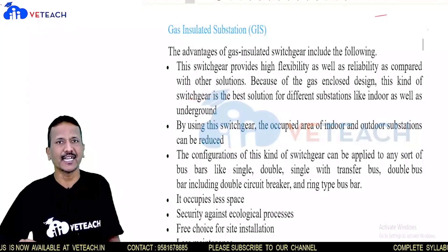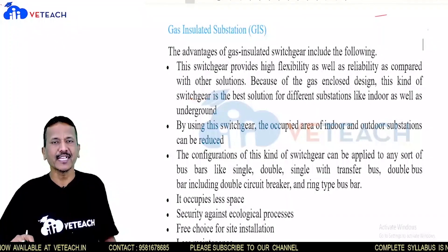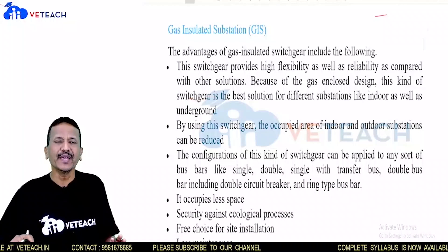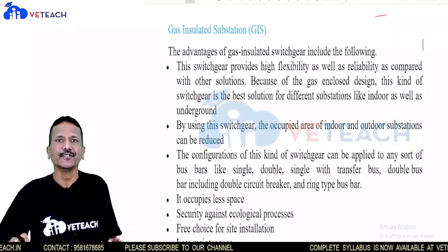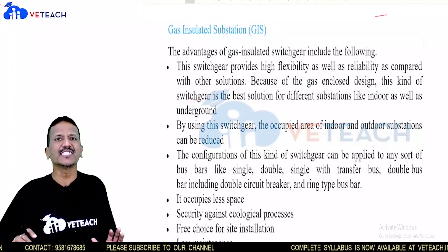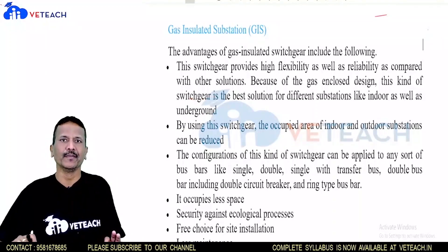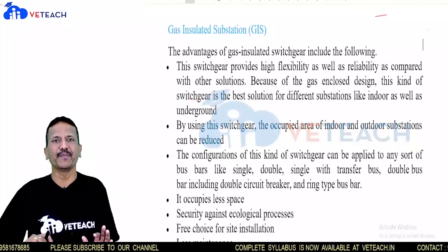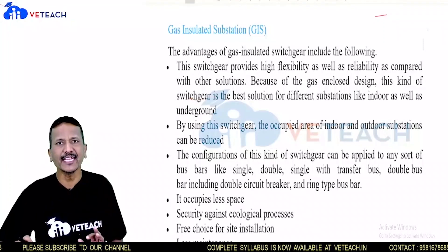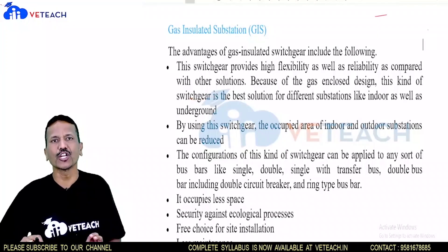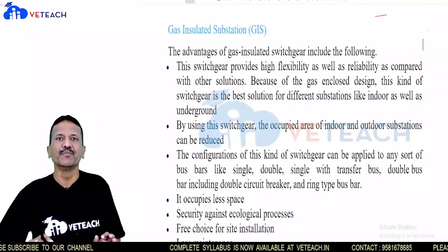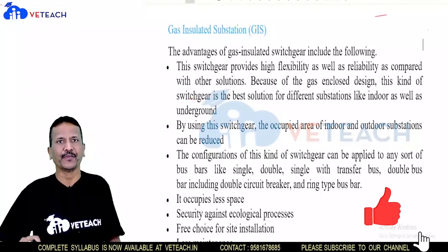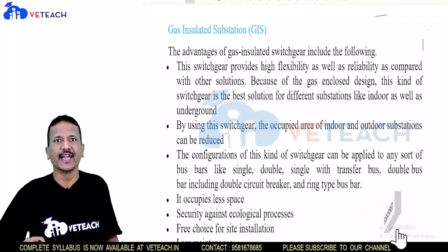Comparing AIS and GIS: in GIS the site area required is very low, so it can be constructed inside apartments or inside rooms. Whereas air insulated substations are outdoor substations, GIS can be implemented indoors as well, which is a good advantage. The space required is also very less.